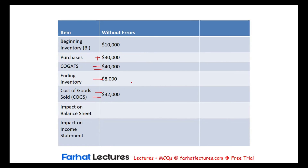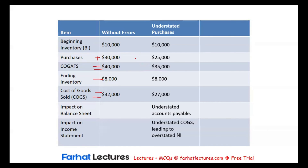Let's assume that the company understated its purchases by $5,000. The cost of goods available for sale would also be understated by $5,000 — $25,000 plus $10,000. We can assume the ending inventory is fairly stated at $8,000. The cost of goods sold would then be $35,000 minus $8,000 equals $27,000. In this case, the cost of goods sold is also understated by $5,000 — $32,000 minus $27,000.